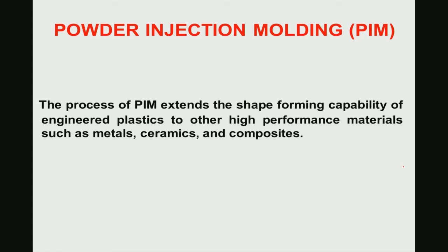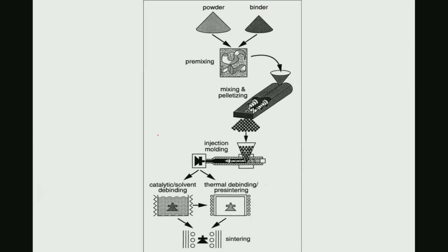Powder injection molding extends the shape-forming capability of engineered plastics to other high-performance materials including metals, ceramics, and composites. The process involves: first pre-mixing powder and binder, then mixing and pelletization into uniform small pellets, then feeding into an injection molding chamber to get the mold shape, followed by binder removal by heating until the binder evaporates, and finally sintering in the case of metals or ceramics.